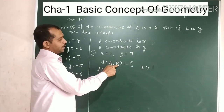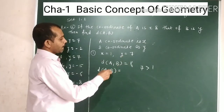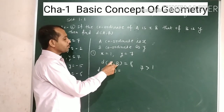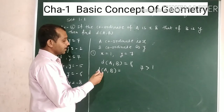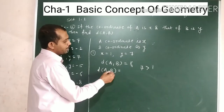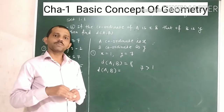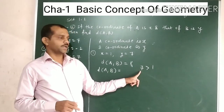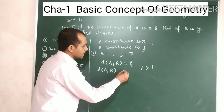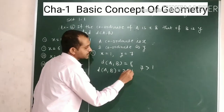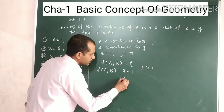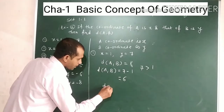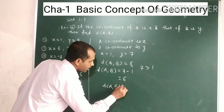The coordinate of point A is 1 and the coordinate of point B is 7. Now we will find the distance between A and B. The distance between A and B is the bigger number minus the smaller number. 7 is the bigger number and 1 is the smaller.